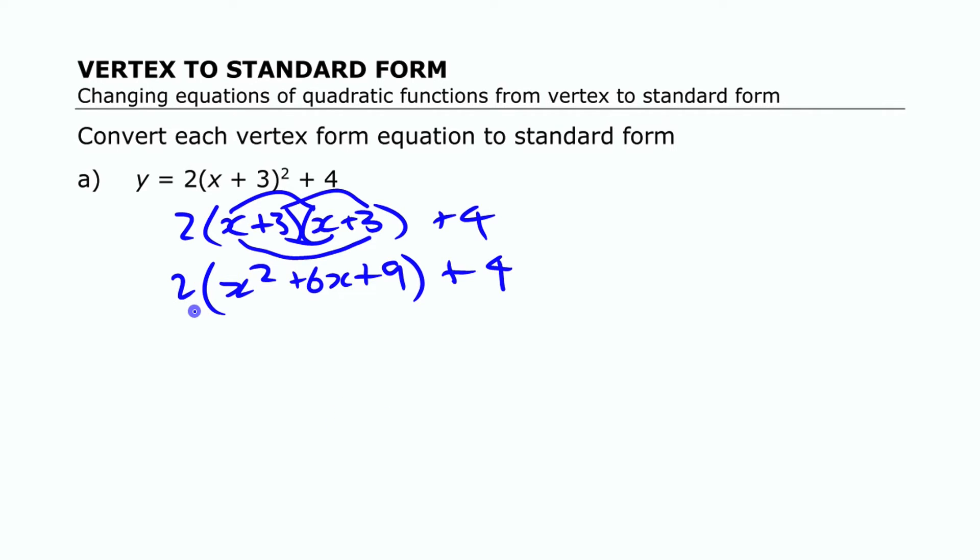Next step is to multiply out that 2, expand that and write it without those brackets and we will have 2x squared plus 12x plus 18 and then the 4 left on the end. And the last thing you can do is combine those like terms together there and write it as, we'll put y equals at the front. Probably should have done that all along. 2x squared plus 12x plus 22, right?